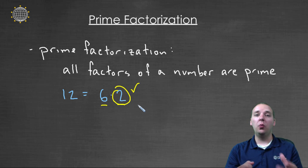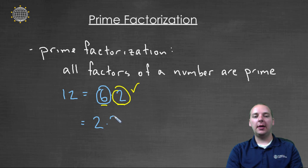The only factors of two are one and itself. But six on the other hand, I think we can continue to work on six. For example, we could break six down into two times three, and then times the two that we already had. So twelve can be written as two times three times two. Or if you want to label them in increasing order, you can say two times two times three. The order doesn't really matter.